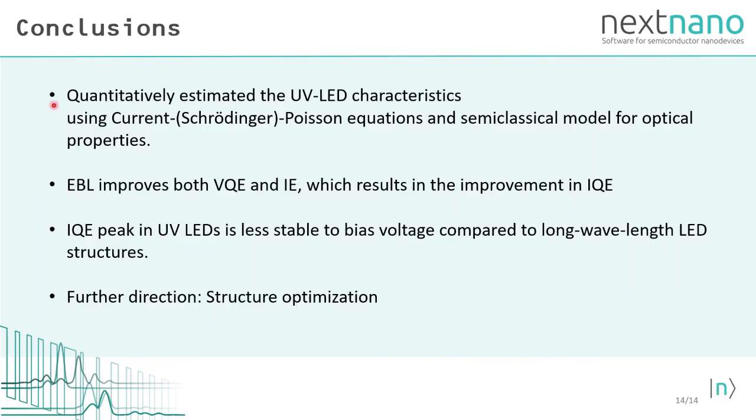So here are the conclusions. In this video, we quantitatively estimated the UV LED characteristics using current-Poisson equations and semi-classical model for optical properties. We could see that EBL improves both VQE and IE, which results in the improvement in the internal quantum efficiency. We also found IQE peak in UV LEDs is less stable to bias voltage compared to long wavelength LED structures. What we have done is the comparison of IQEs with different barrier height of blocking layers. But once we can understand the mechanisms of IQE degradation, we can also use NEXTNANO++ to optimize the structure in order to obtain the ideal characteristics of UV LEDs.